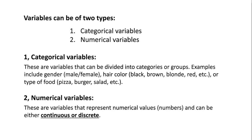Variables can be of two types: categorical variables and numerical variables. Categorical variables are variables that can be divided into categories or groups. Examples include gender (male, female), hair color (black, brown, blonde, red), or type of food (pizza, burger, salad). Numerical variables are variables that represent numerical values and can be either continuous or discrete.